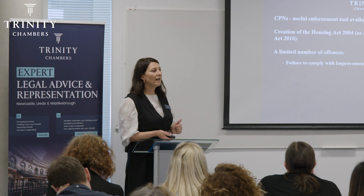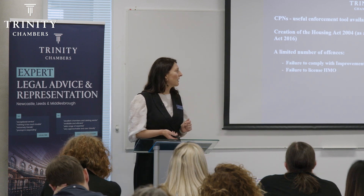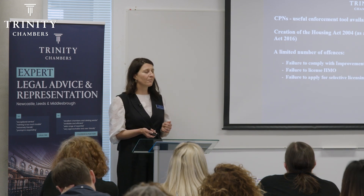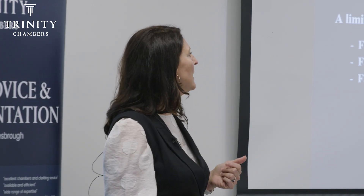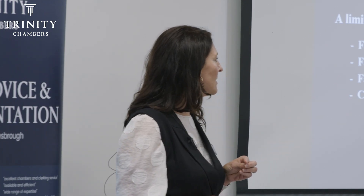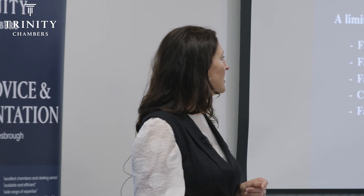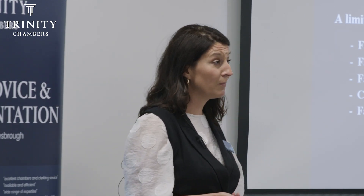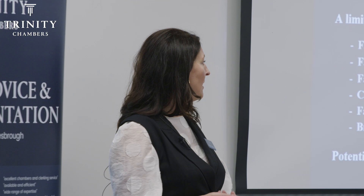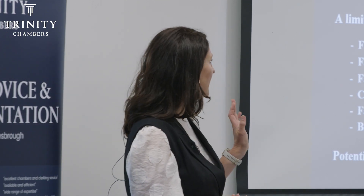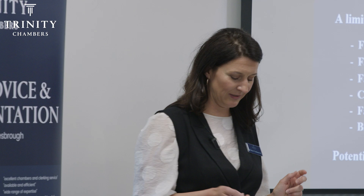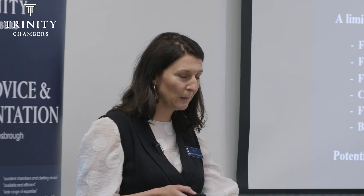These penalties relate to only a number of offenses set out in the Act: failure to comply with an improvement notice, failure to license an HMO, failure to apply for a selective license where you have designated selective license areas, failure to comply with selective license conditions, contravention of an overcrowding notice, failure to comply with the management regulations in relation to houses in multiple occupation, and breach of a banning order. So there are only six offenses that it applies to.